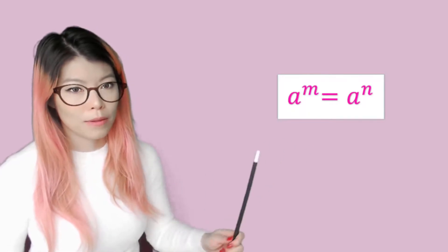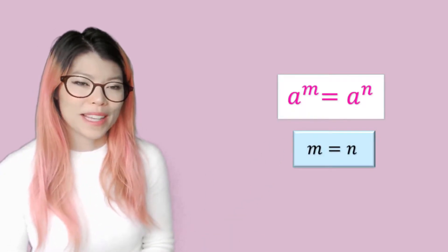We're going to look at when we have equations that have the same base on both sides and different powers, then we can say that the powers must equate. So let's do some examples.